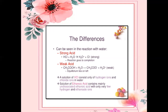A solution of HCl consists only of hydrogen ions and chloride ions in water. A solution of ethanoic acid contains mainly undissociated ethanoic acid with only very few hydrogen ions and ethanoate ions. This means that HCl is a strong acid — with chloride ions and hydrogen ions — while ethanoic acid is a weak acid.